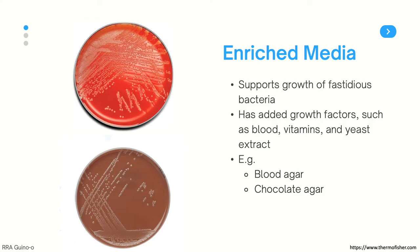Some examples are blood agar, which you can see on the top portion of the slide. This kind of agar can facilitate the growth of most pathogenic bacteria. Then we have chocolate agar, which is the plate you can find on the bottom, and this type of agar is needed to grow Neisseria, which is a causative agent of gonorrhea.